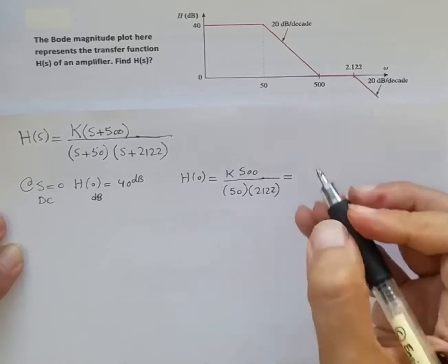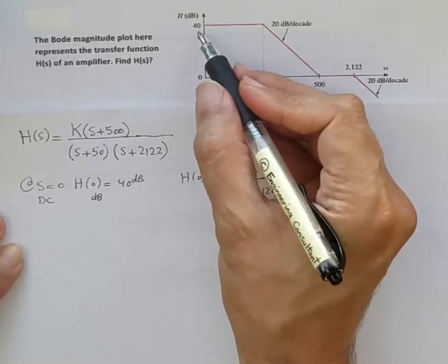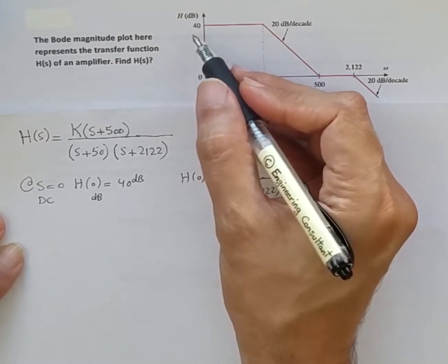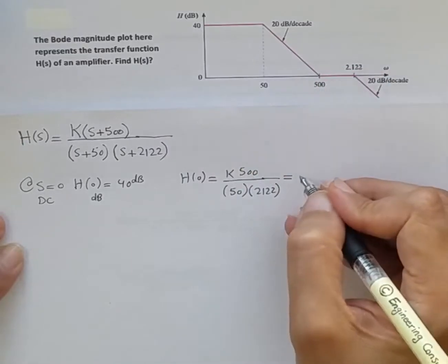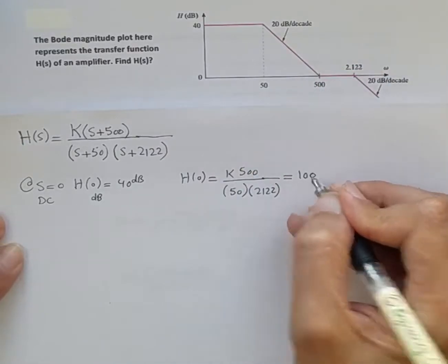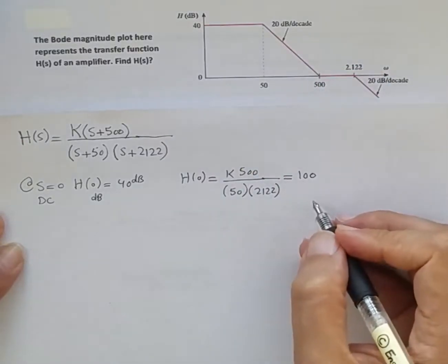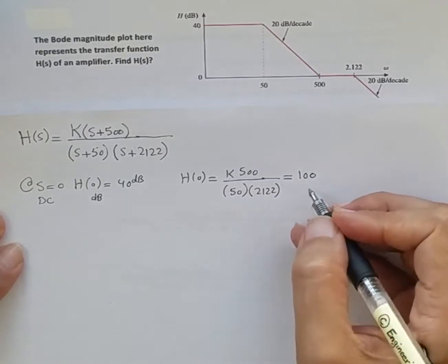The answer for 40 dB is effectively 20 log₁₀ of whatever gain we had, so it should have been 100. In this scenario, what we do is we just compute K from here.